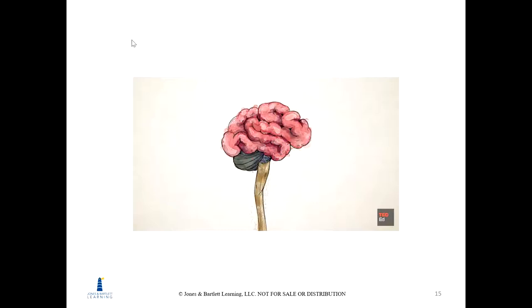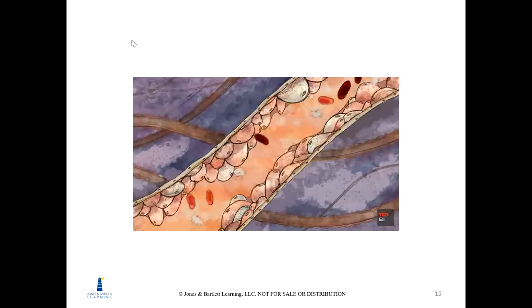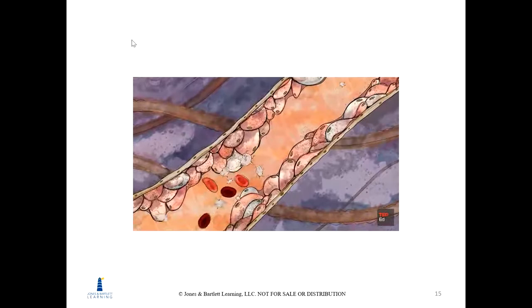Within about 10 seconds, the bloodstream carries nicotine to the brain, triggering the release of dopamine and other neurotransmitters including endorphins, creating the pleasurable sensations that make smoking highly addictive. Nicotine and other chemicals simultaneously cause constriction of blood vessels and damage their delicate endothelial lining, restricting blood flow.